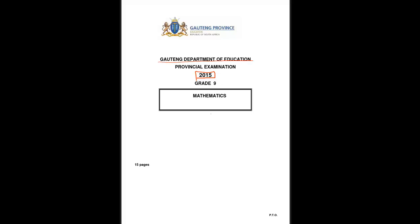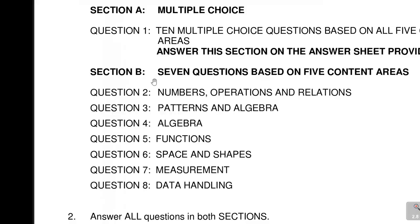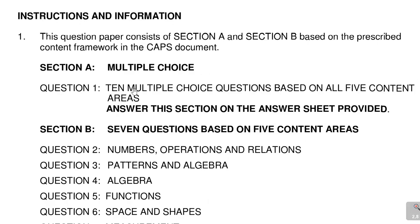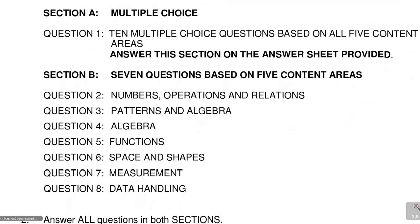Now let us look at this revision session. It's one of the old papers — this is 2015, and this question paper was written in Haudeun. It's mathematics grade 9. There are different content areas: question number one was on multiple choice based on all five content areas, and section B is also based on five content areas. This is what I'll be bringing to you when I'm doing the revisions.